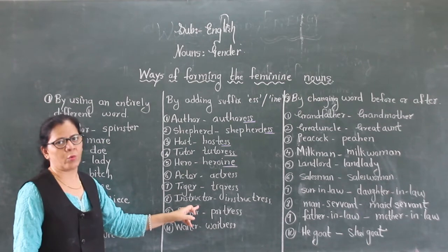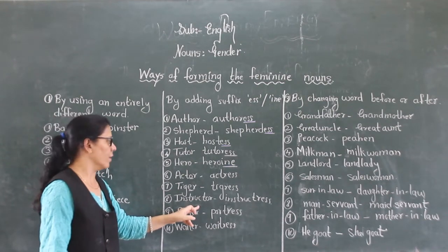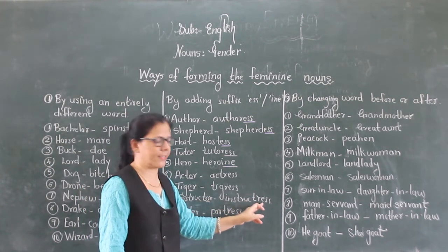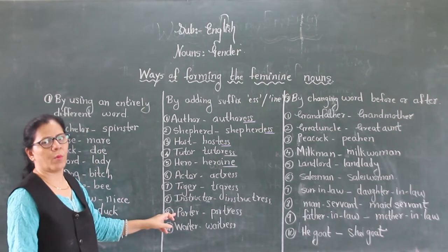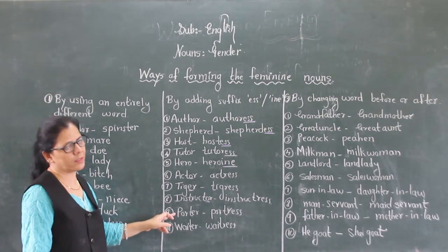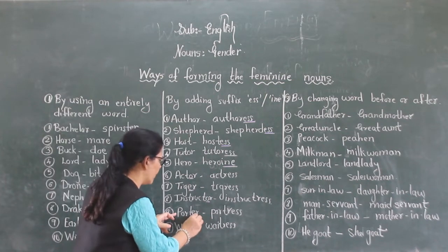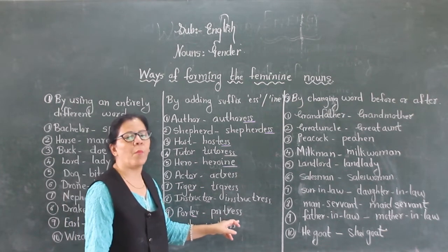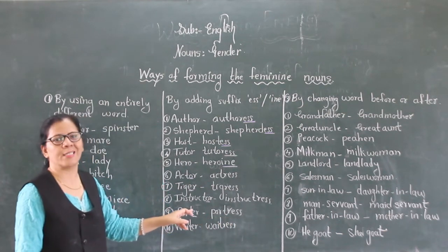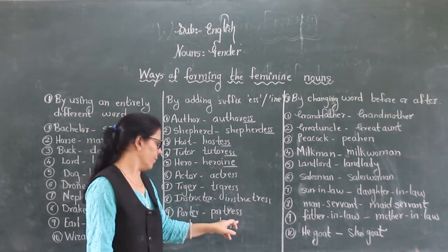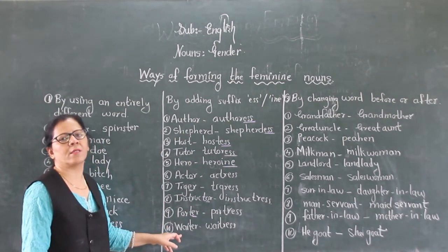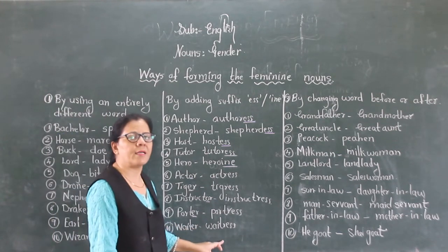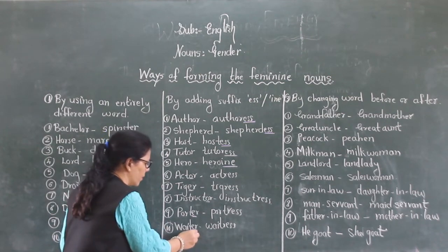Instructor, instructress — a male who gives instruction is an instructor. We drop the 'o' and add -ess to get instructress. Porter, portress — one who carries the luggage is called a porter. We drop the last vowel 'e' and form the feminine: portress. A female who carries the luggage is a portress. Waiter, waitress — one who serves in the restaurant. A man who serves in a restaurant is a waiter, and a female is a waitress. Again, here we have dropped the 'e'.